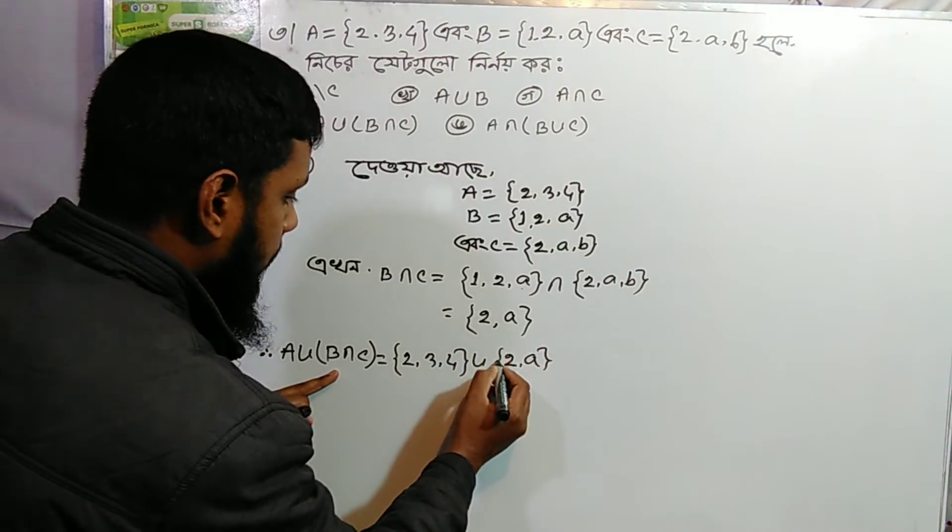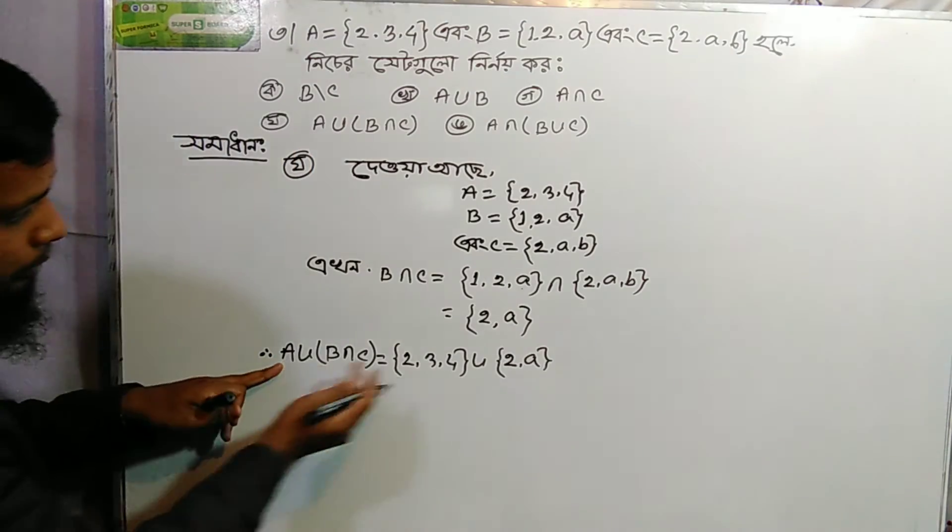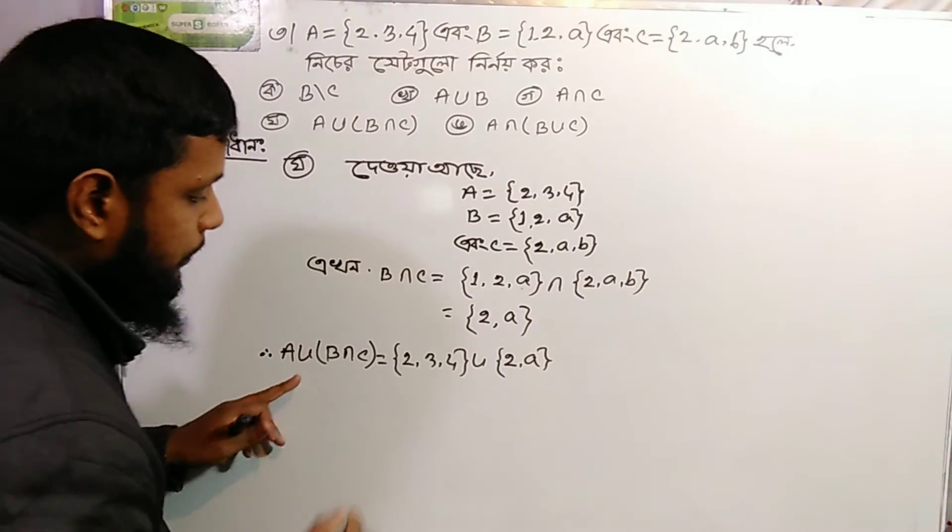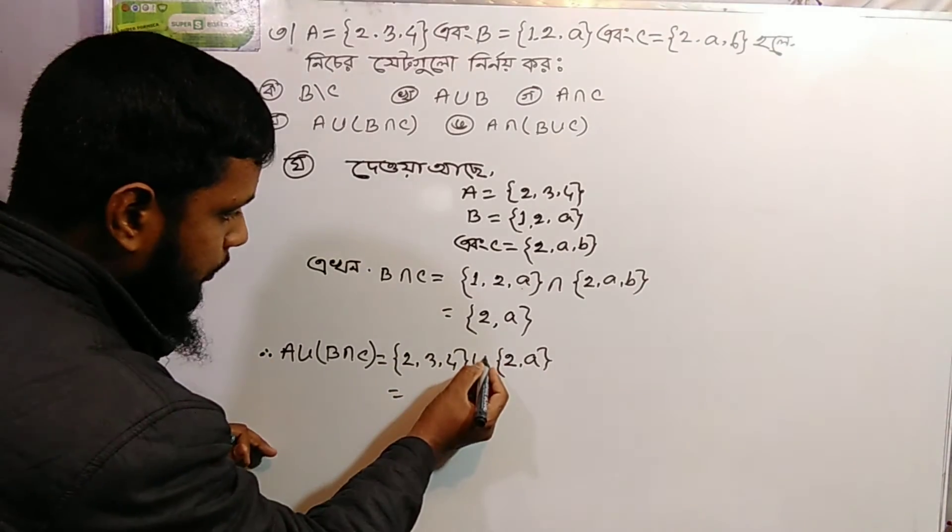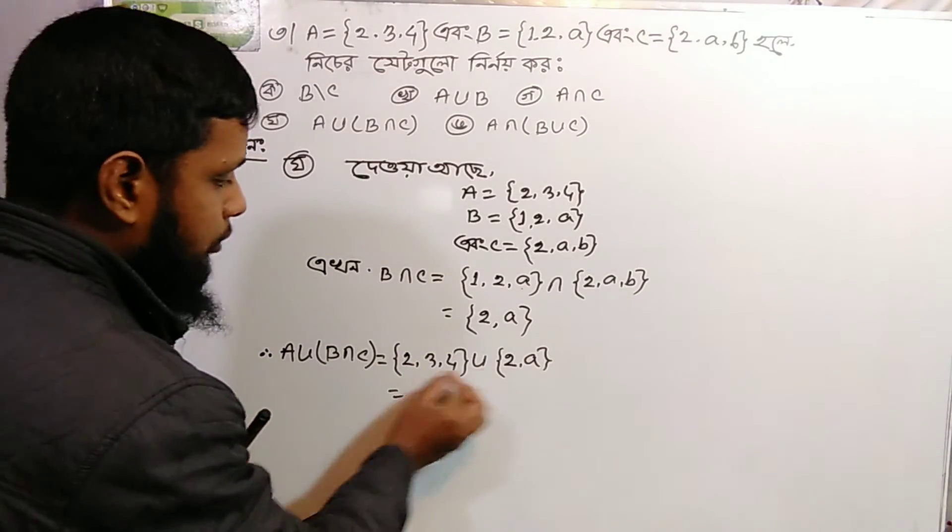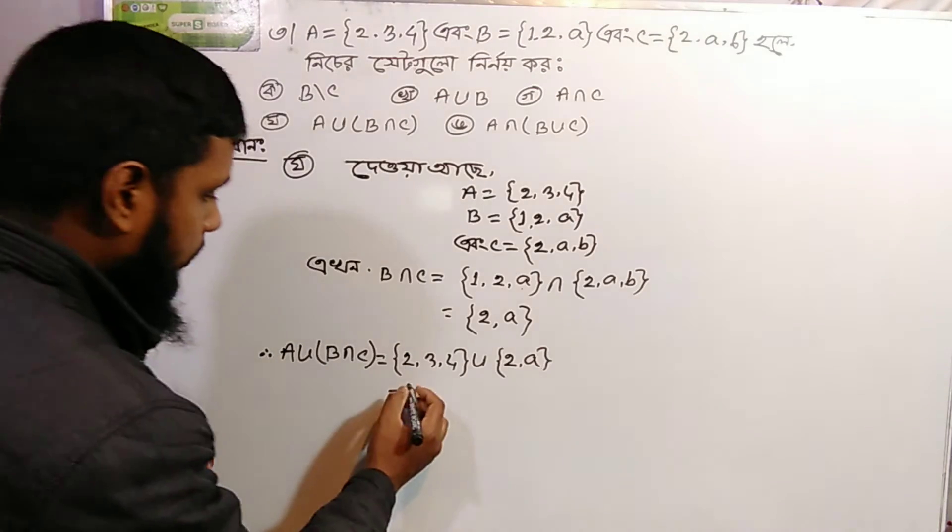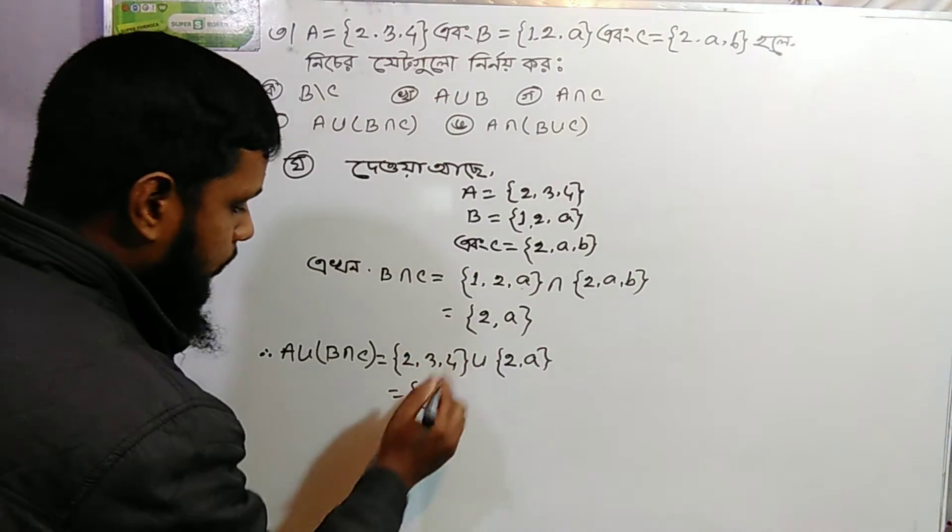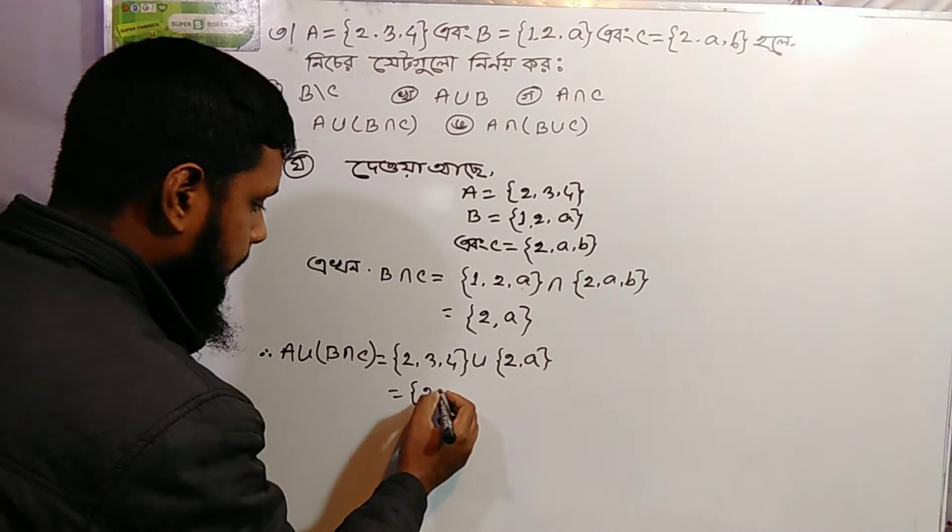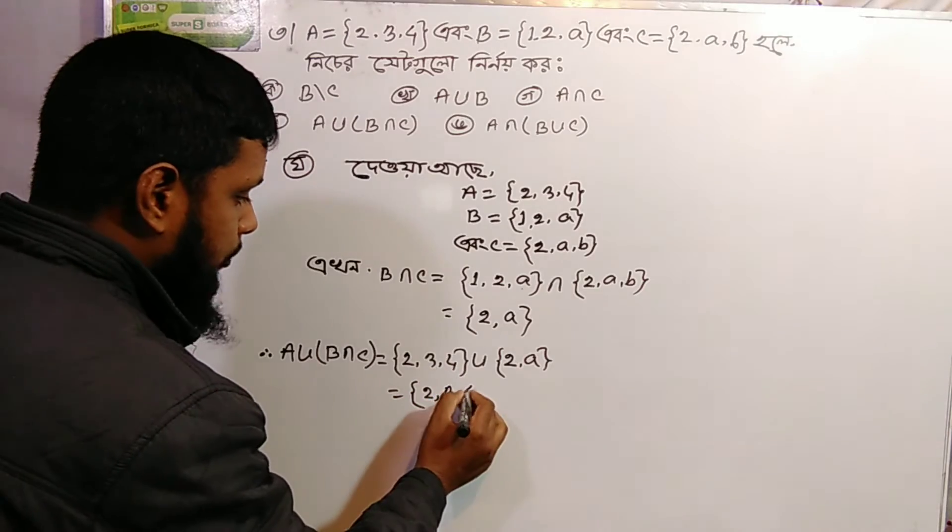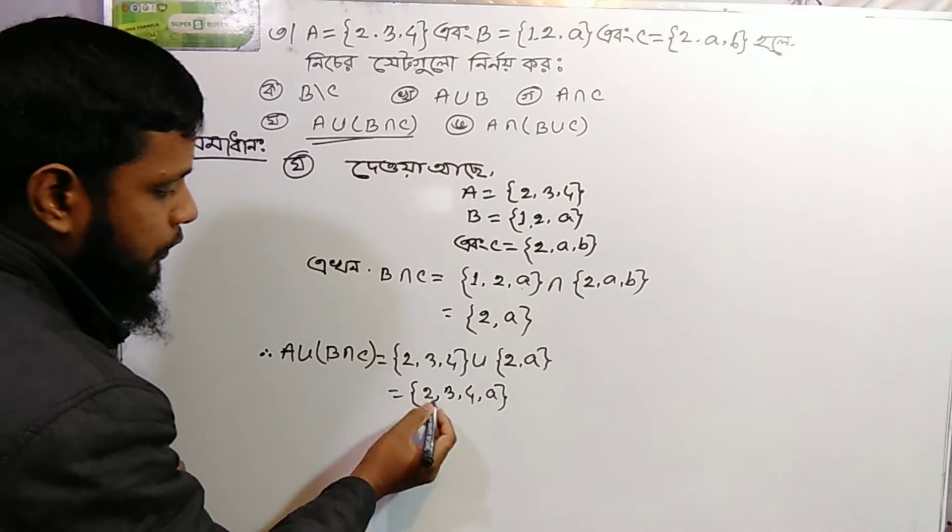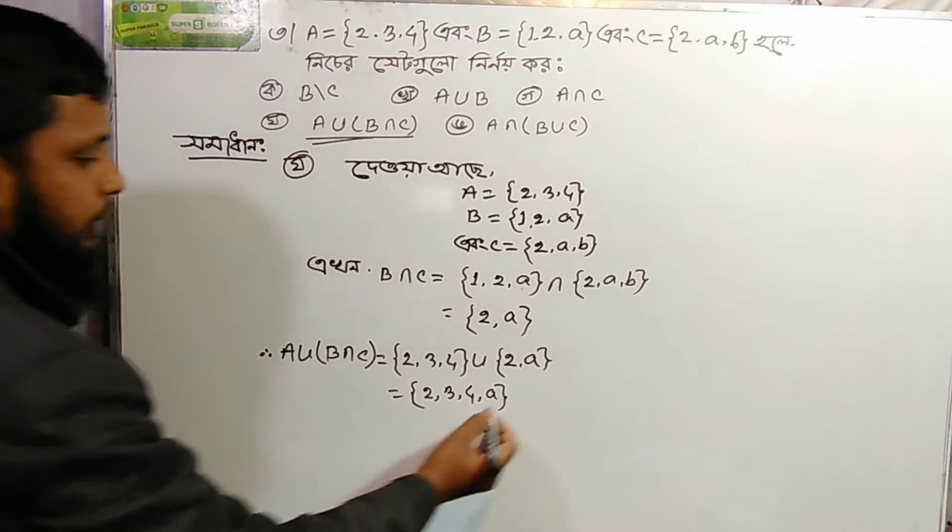A union (B intersection C): First compute B intersection C which is {2, a}. Then A union {2, a} equals {2, 3, 4} union {2, a} which gives {2, 3, 4, a}. This is the answer.